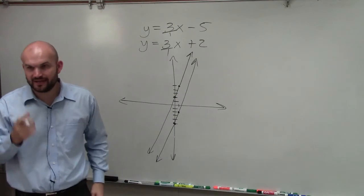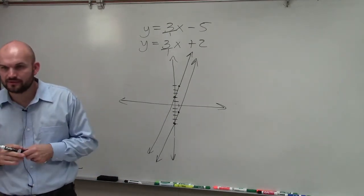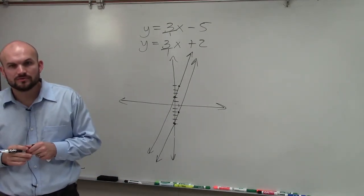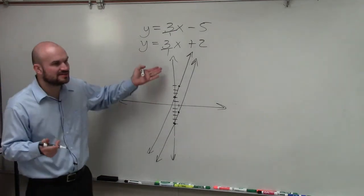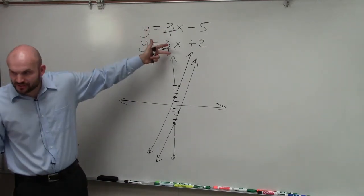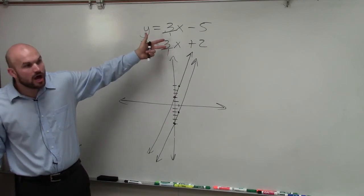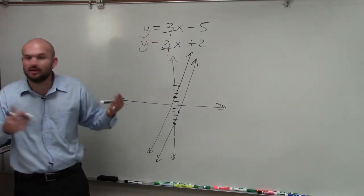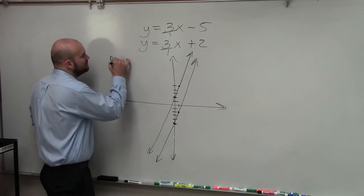And do we have a specific intersection point? No. So if you notice, they also have exactly the same slope. So are they ever going to intersect? No. So when you're doing a problem and you have parallel lines, they don't have a solution.